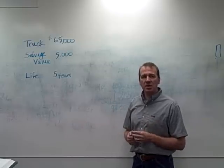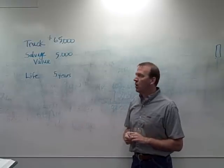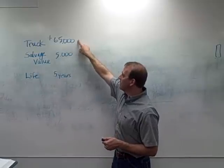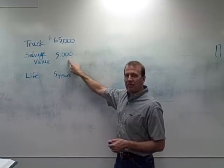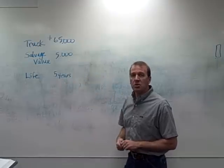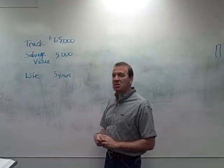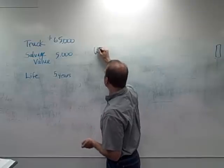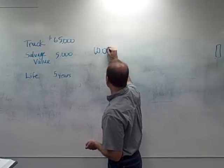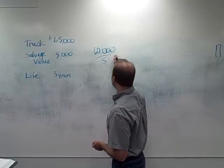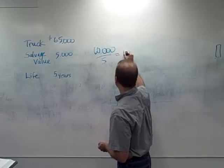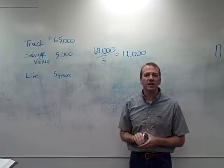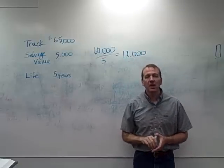So if we purchase this on January 1st and now it's December 31st, how much do we depreciate? We need to depreciate from $65,000 down to $5,000 over five years, so we depreciate a total of $60,000 over five years — that's $12,000 a year.